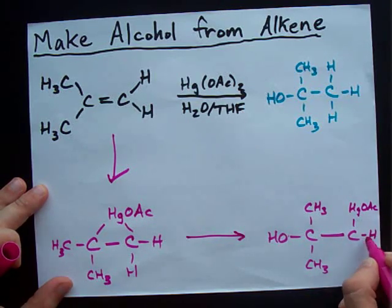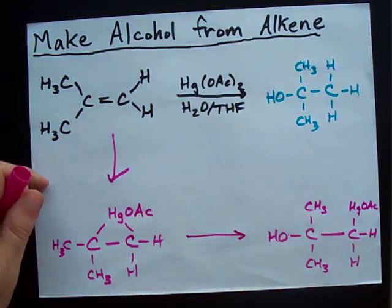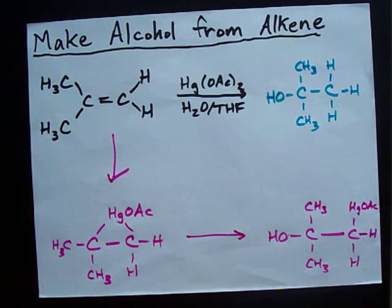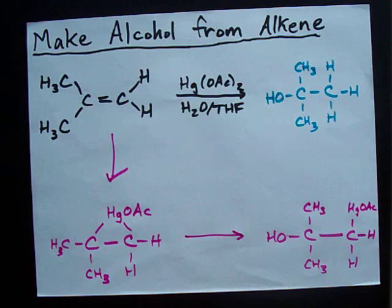As you probably know, triangular shapes among carbons are not that popular in the chemistry world. The OH comes in and breaks open one of the bonds between the C and the mercury.